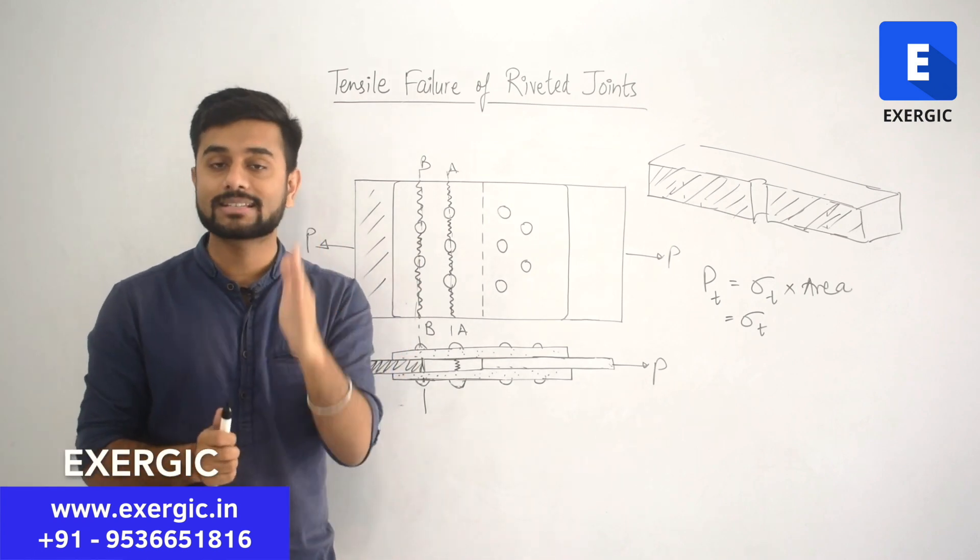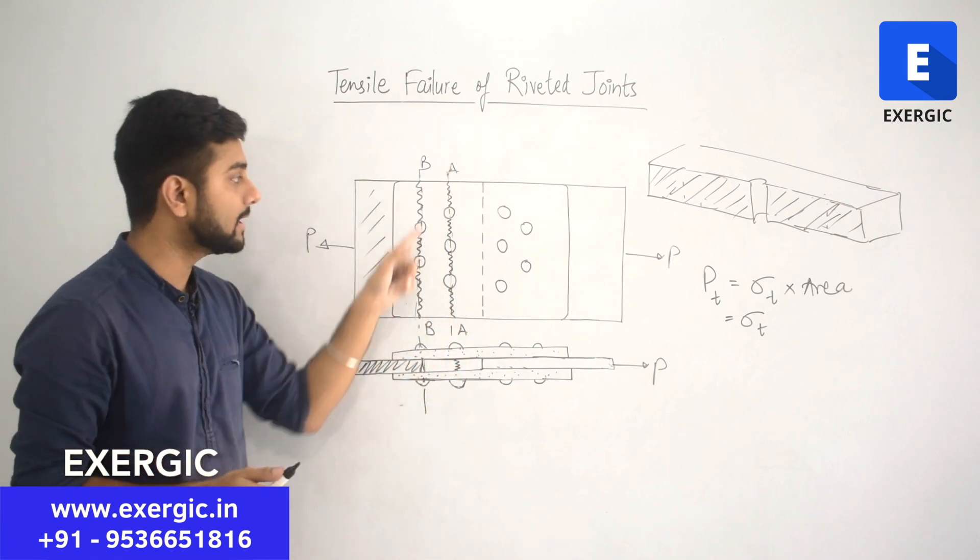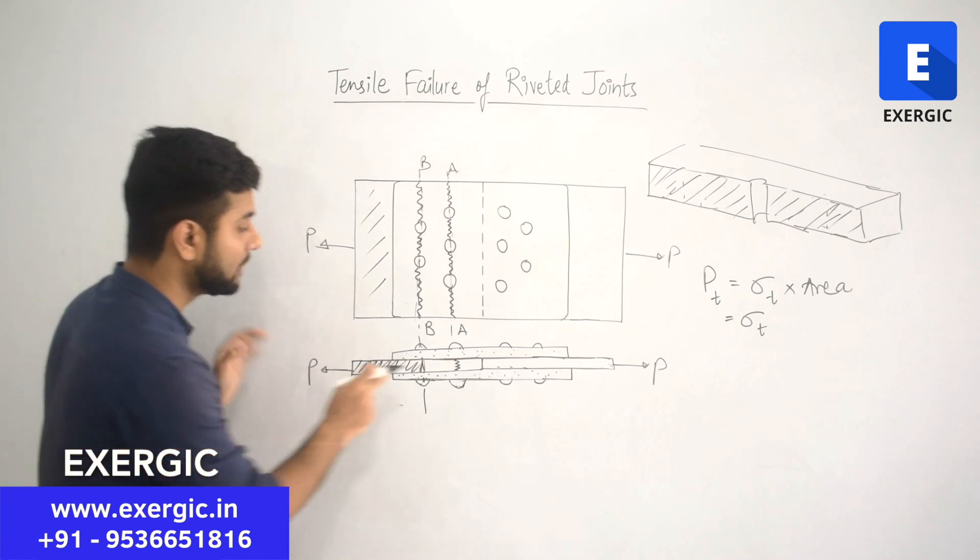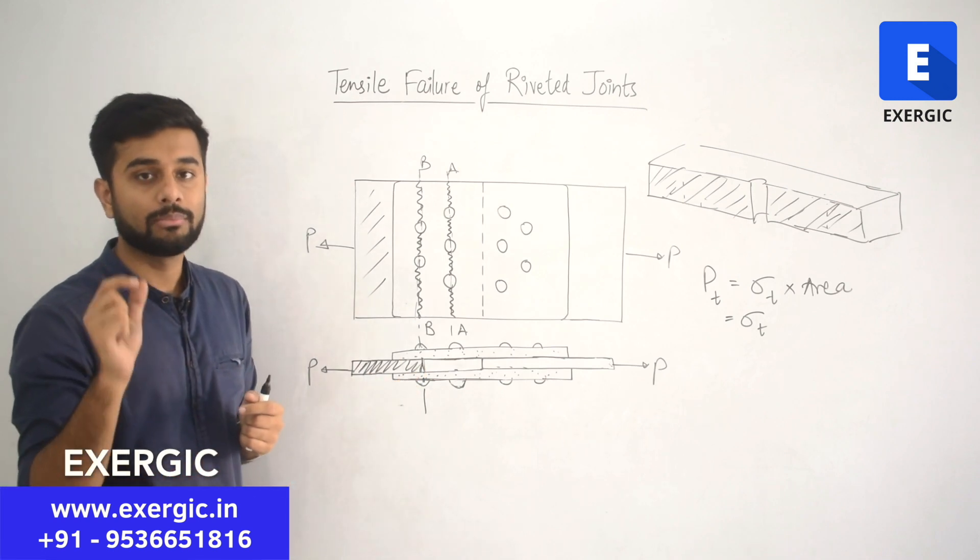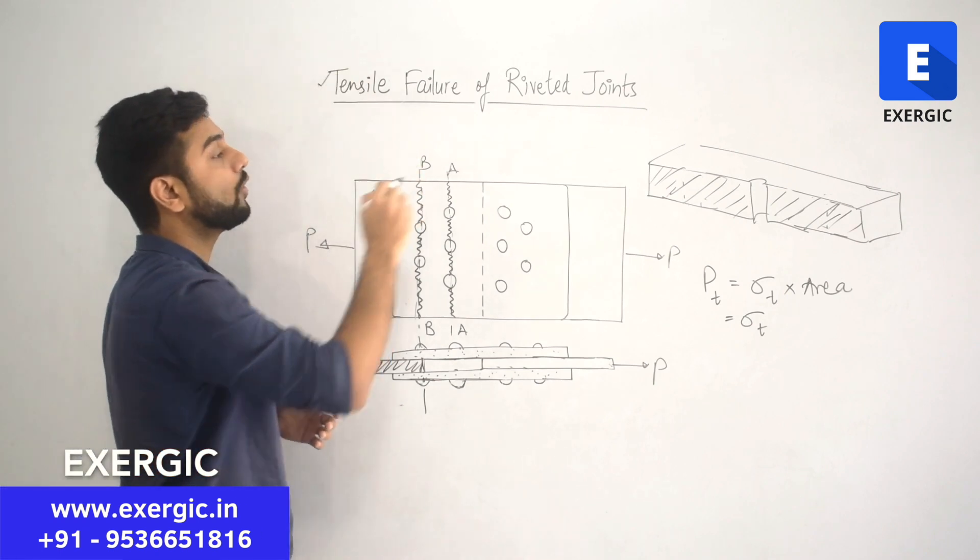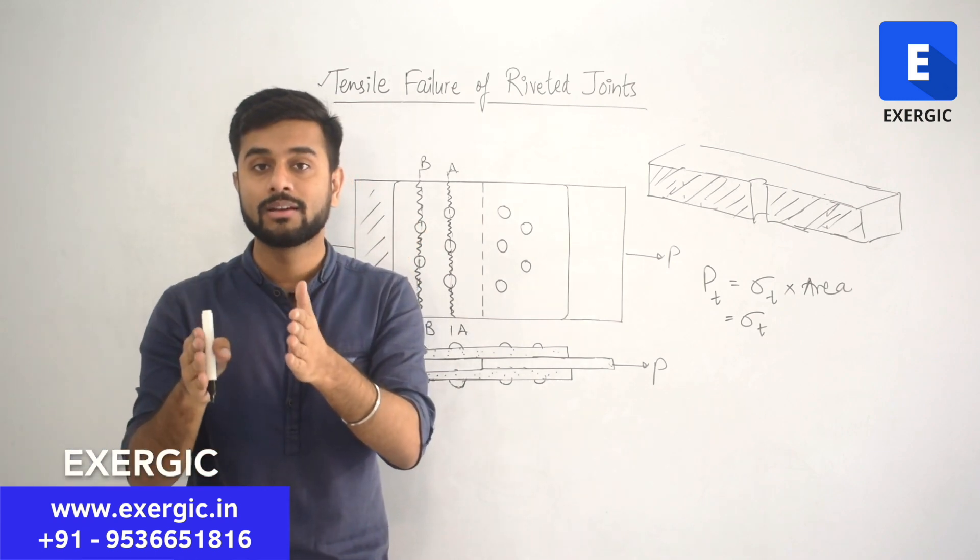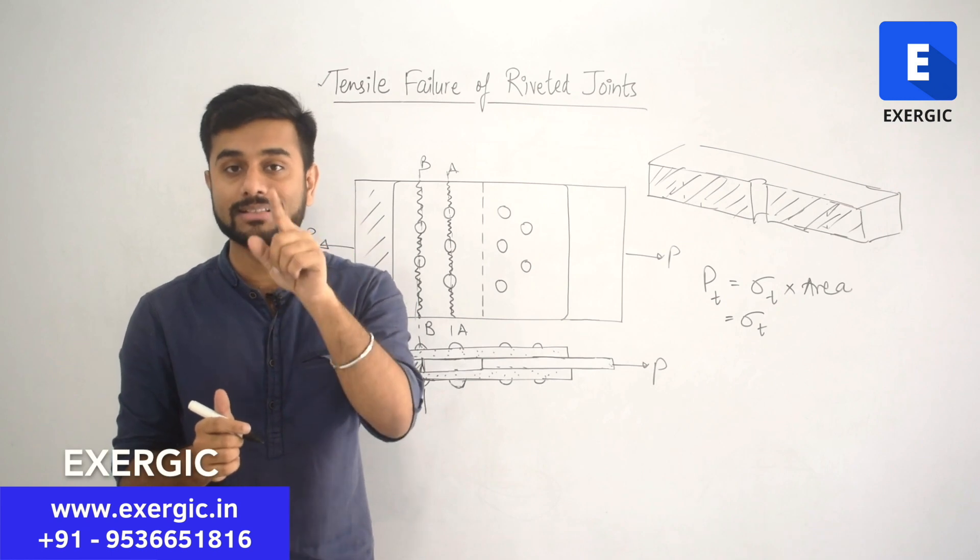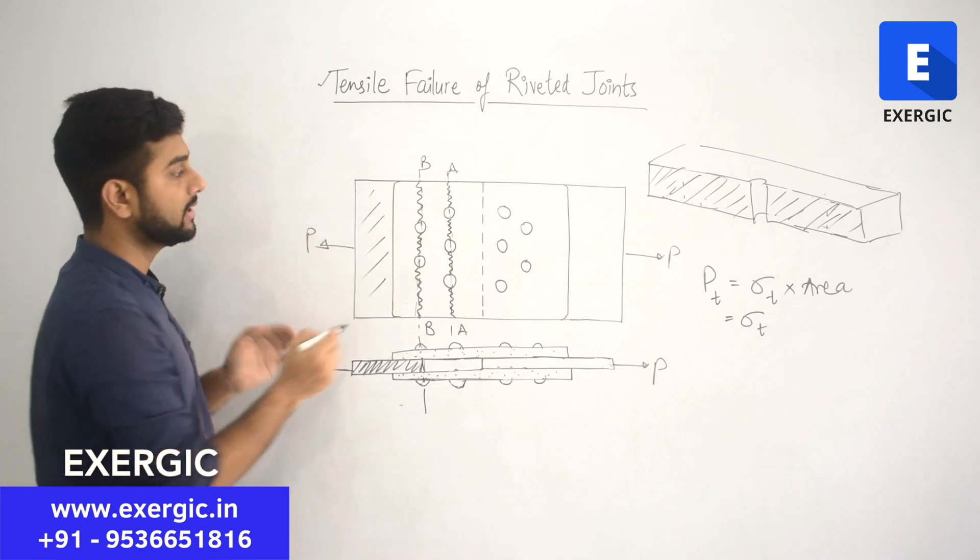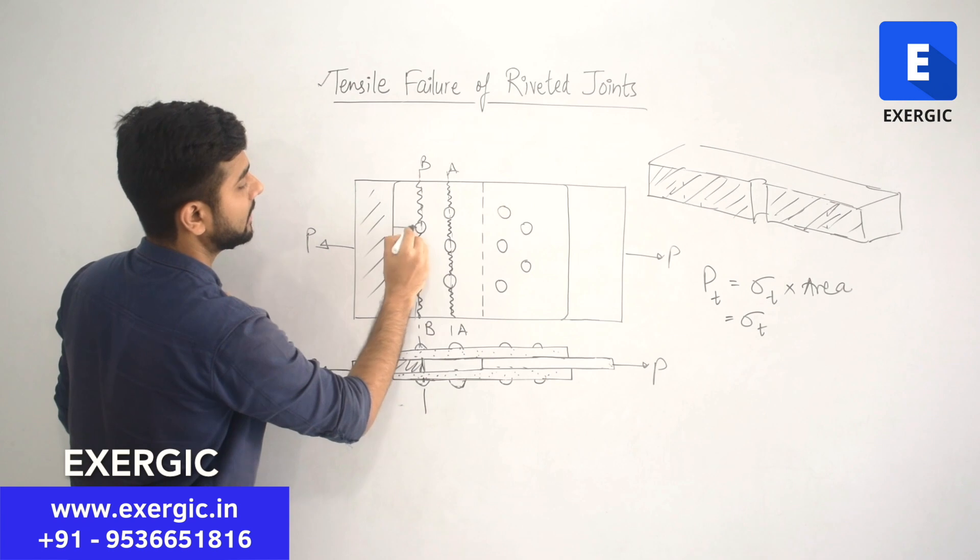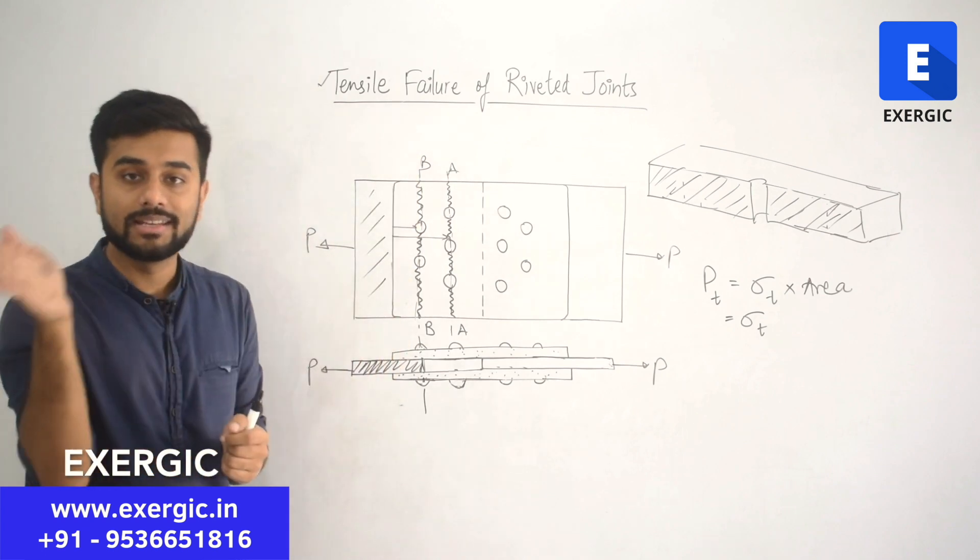The strength of section AA is not going to matter. Whether plate is broken or intact at section AA, it does not matter. Because even if this is intact, if this fails, the plate will move away. So, what you need to remember is that for tensile failure of riveted joints, when you have a setup where more than one rows are present, then the strength, tensile strength will be decided by that row which is nearest to this edge. You see, if you consider this edge, this is near, this is far. So, strength will be decided by that row which is nearest to the edge.